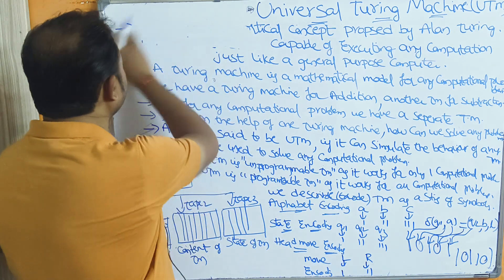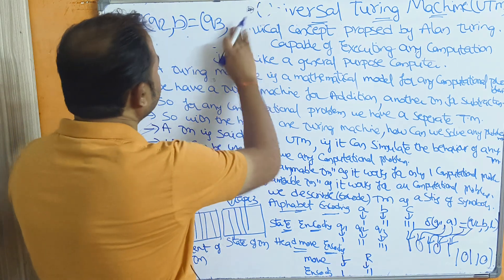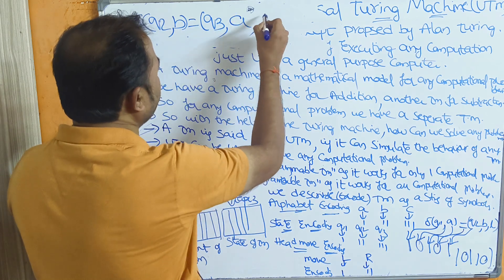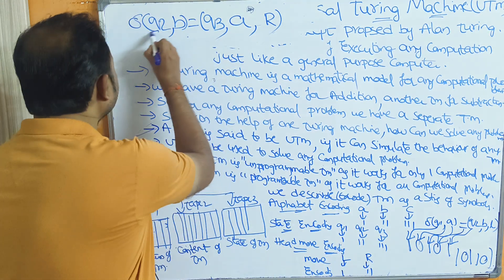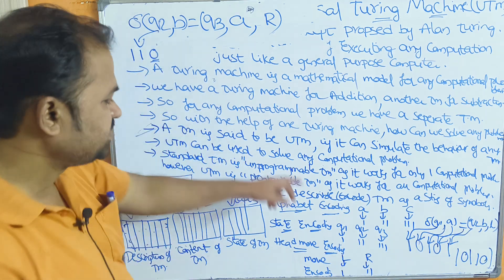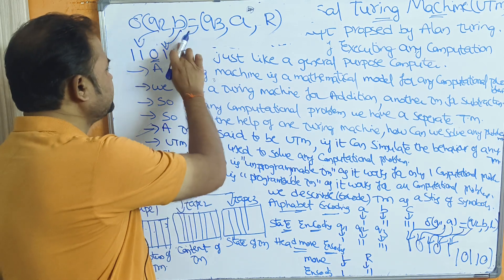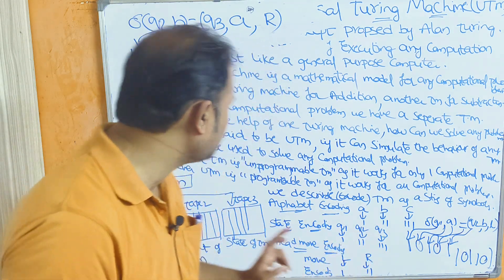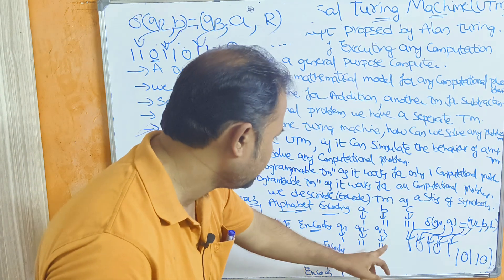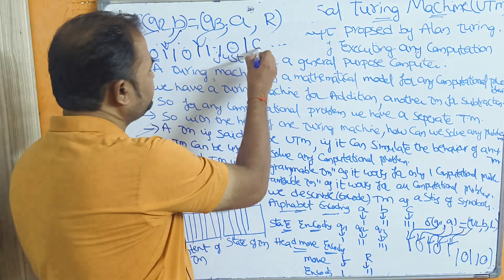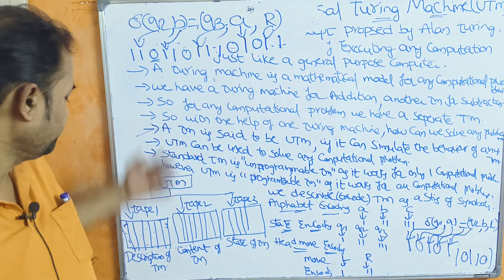Let us write one more transition function. Consider delta(Q2, B) = (Q3, A, R). Q2 is encoded as 11, B is encoded as 11 — separated by 0. Q3 is encoded as 111, A is encoded as 1, and Right (R) is encoded as 11. This information is stored in Tape 1, which mainly contains the description of the Turing Machine.